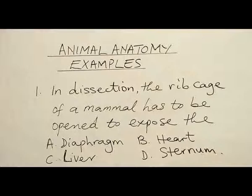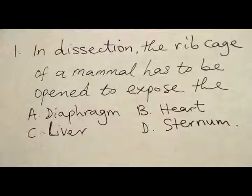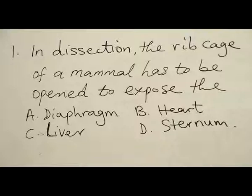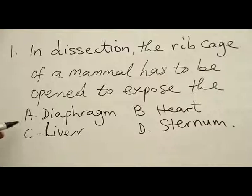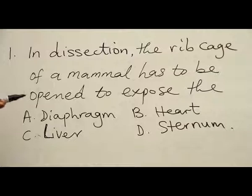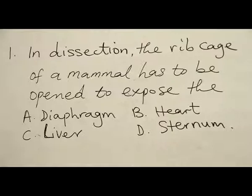Example 1. In that section, the ribcage of a mammal has to be opened to expose: A, diaphragm; B, heart; C, liver; D, sternum. Option A is a muscle that separates the abdominal cavity from the thoracic cavity. The thoracic cavity is the cavity that the ribcage encloses.